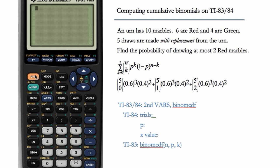So we'll go to second vars binomcdf. And we're going to be entering five, comma, 0.6, comma, two to get the probability of at most two. And we get the same answer.